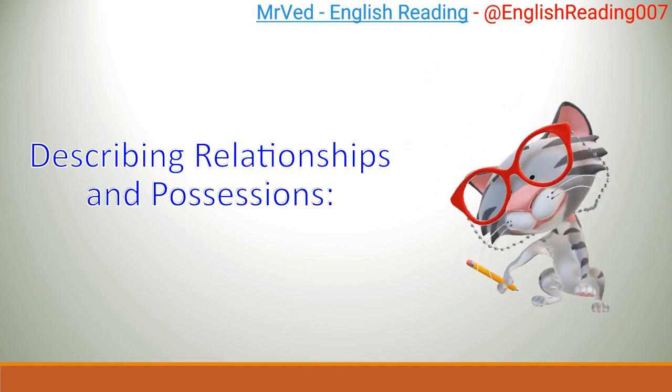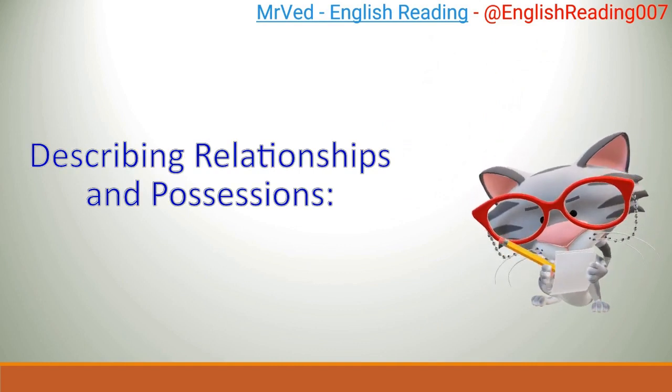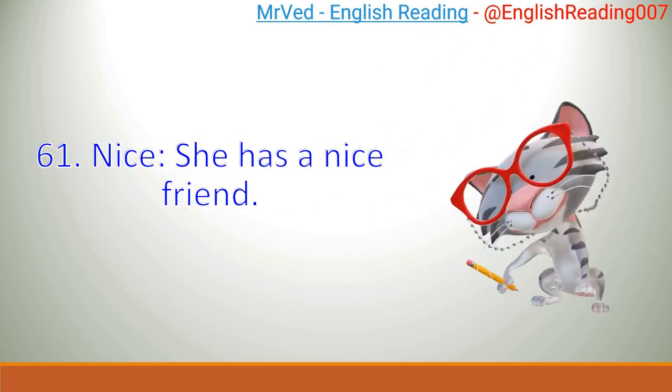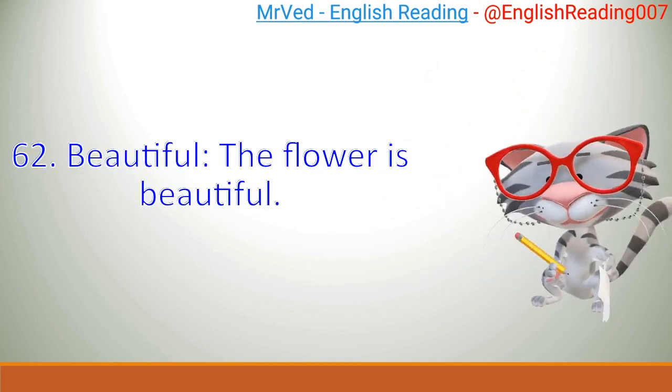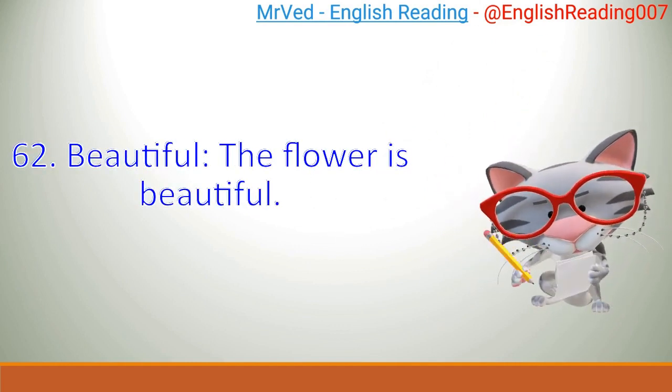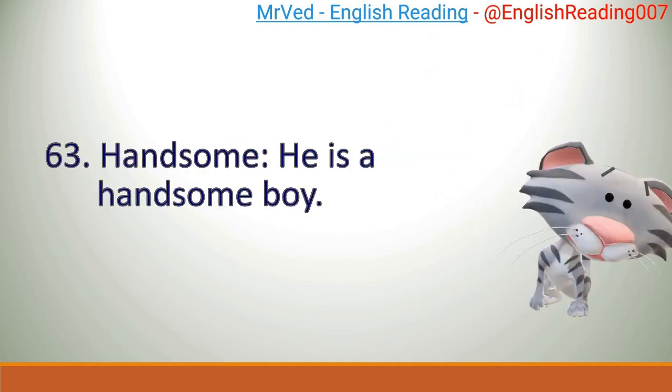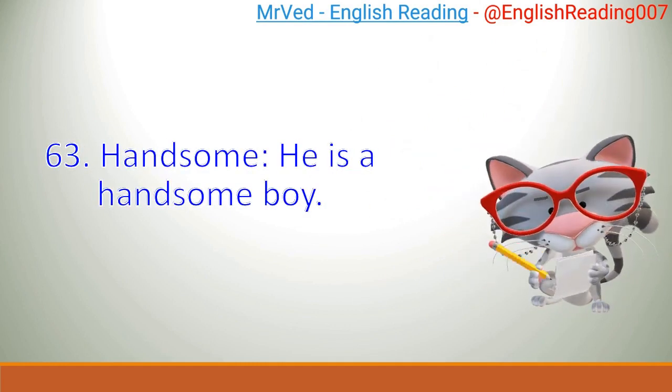Describing Relationships And Possessions. 61. Nice. She has a nice friend. 62. Beautiful. The flower is beautiful. 63. Handsome. He is a handsome boy.